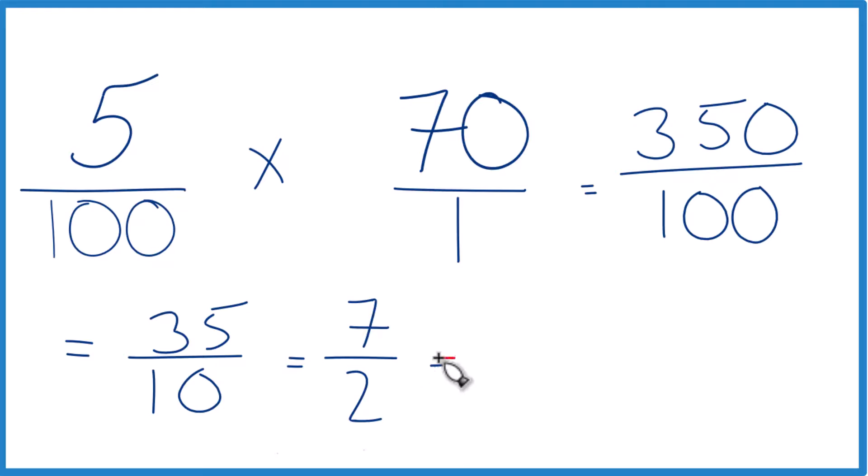We could change this to a mixed number here, because two goes into seven three times, with one left over, then we have the two, we keep that there. Three and a half or 3.5.